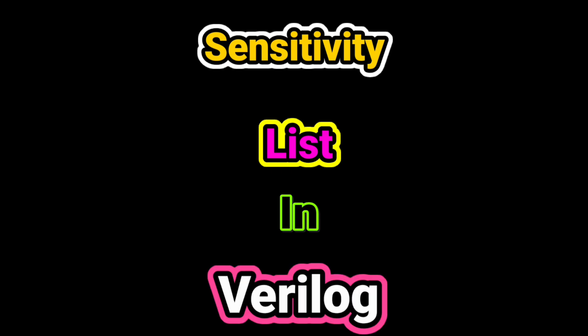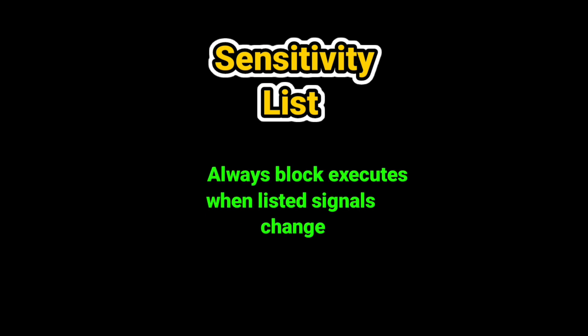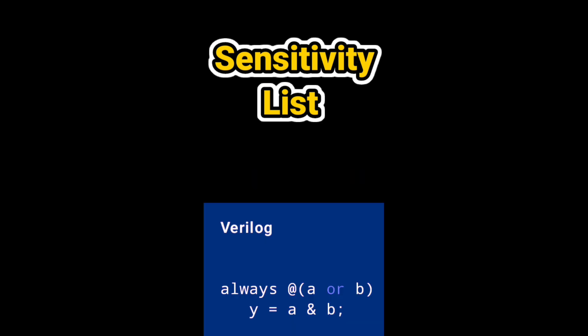In Verilog, a sensitivity list decides when an always block should run. Think of it as the wakeup call for the block. So what is sensitivity list? In simulation, an always block executes whenever the signals inside its sensitivity list change. For example, here a Verilog code is given in which we have always @(A or B), and then Y = A and B. Here the block runs whenever A or B changes.